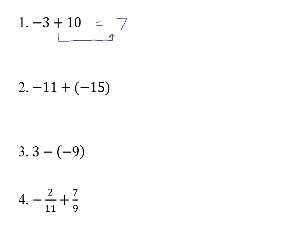Number two says negative eleven plus negative fifteen. Here our signs are the same — they're both negative. So we add the two numbers together: fifteen and eleven make twenty-six. Since they're both negative, we keep that sign to get negative twenty-six.